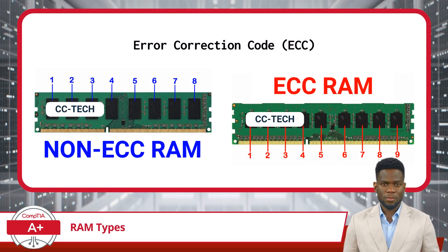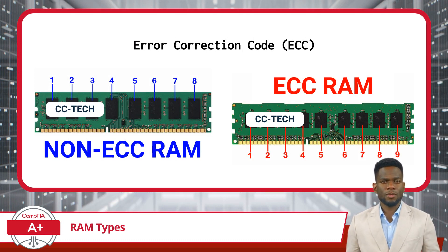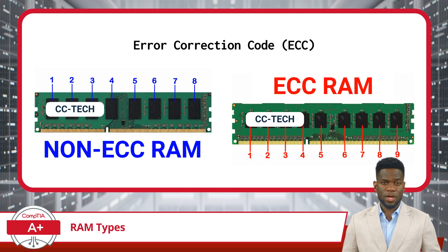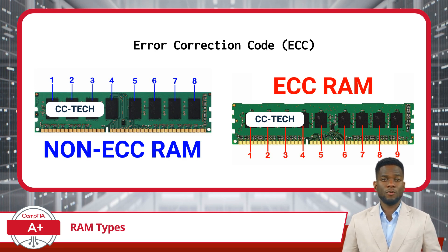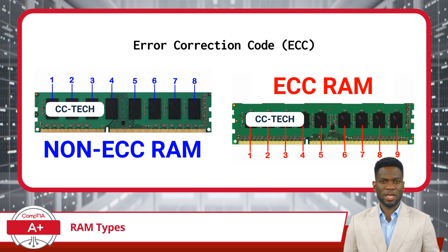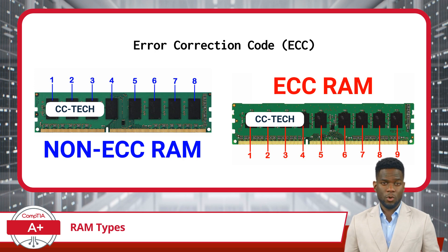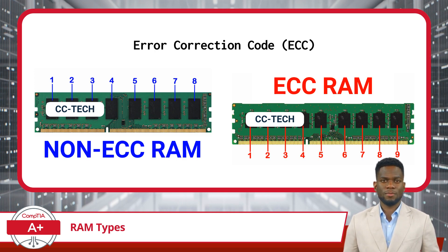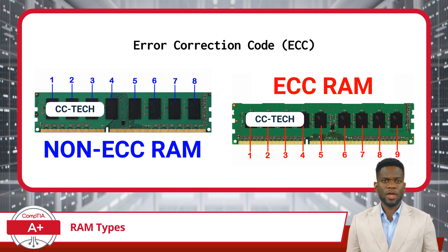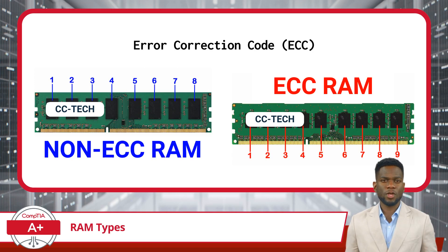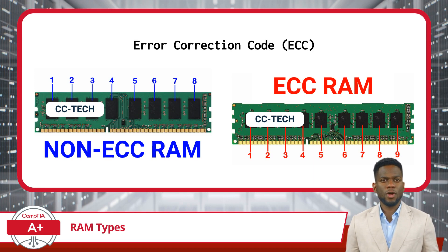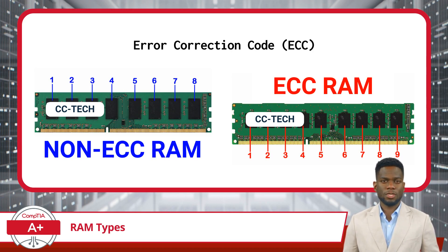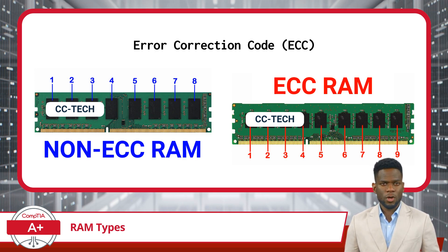Next up, we have ECC RAM. In server environments where data integrity is paramount, error correction code, or ECC RAM, stands out as an indispensable component. Unlike standard RAM modules, ECC RAM incorporates additional circuitry specifically designed for error detection and correction. This sophisticated technology, for an increased cost of course, enables ECC RAM to identify and rectify memory errors on the fly, ensuring that data remains accurate and reliable, even in the face of potential hardware glitches or transient faults. In highly critical systems where even the smallest data corruption could have significant consequences — such as financial transactions or medical records — the robust error handling capabilities of ECC RAM provide peace of mind and safeguard against potential data loss. Therefore, ECC RAM emerges as the preferred choice for servers where reliability and data integrity are non-negotiable priorities.